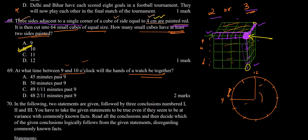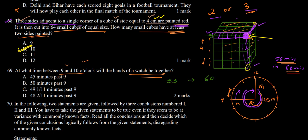For the hands to be together, the minute hand needs to travel 45 minutes to reach the hour hand. There is a rule in clocks: the gap reduces by 55 minutes for every 60 minutes of time elapsed — meaning in 60 minutes the minute hand gains 55 minutes on the hour hand. So to cover a gap of 45 minutes, we calculate: (60/55) × 45.